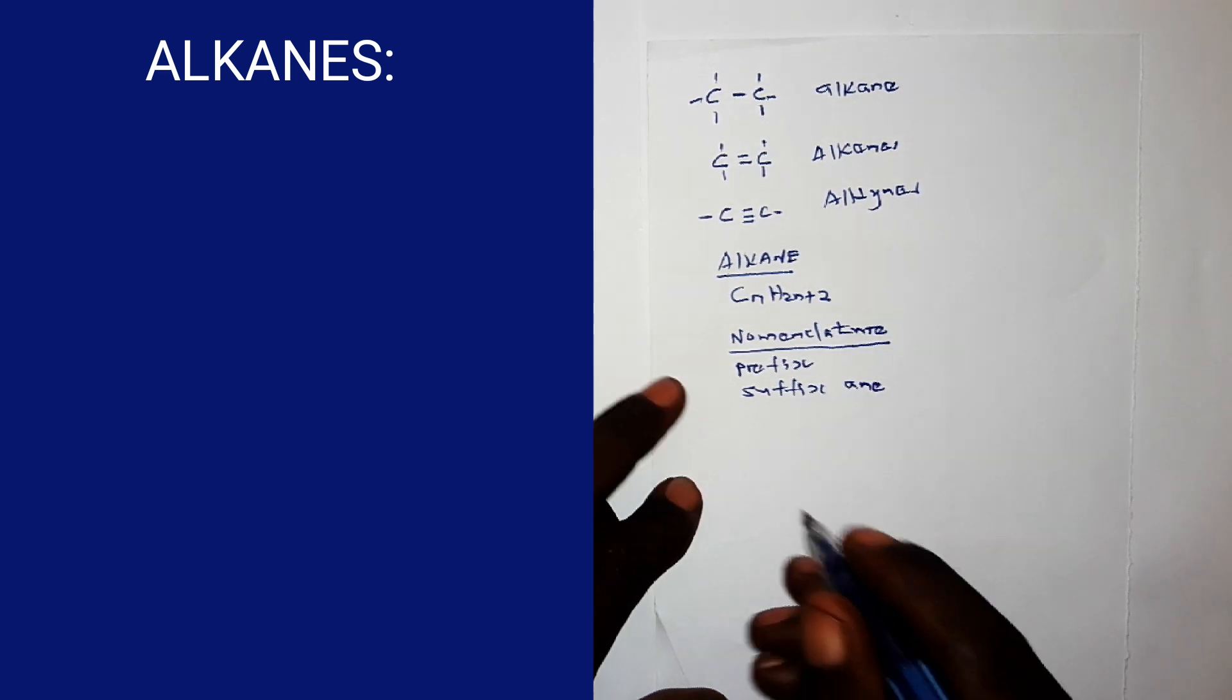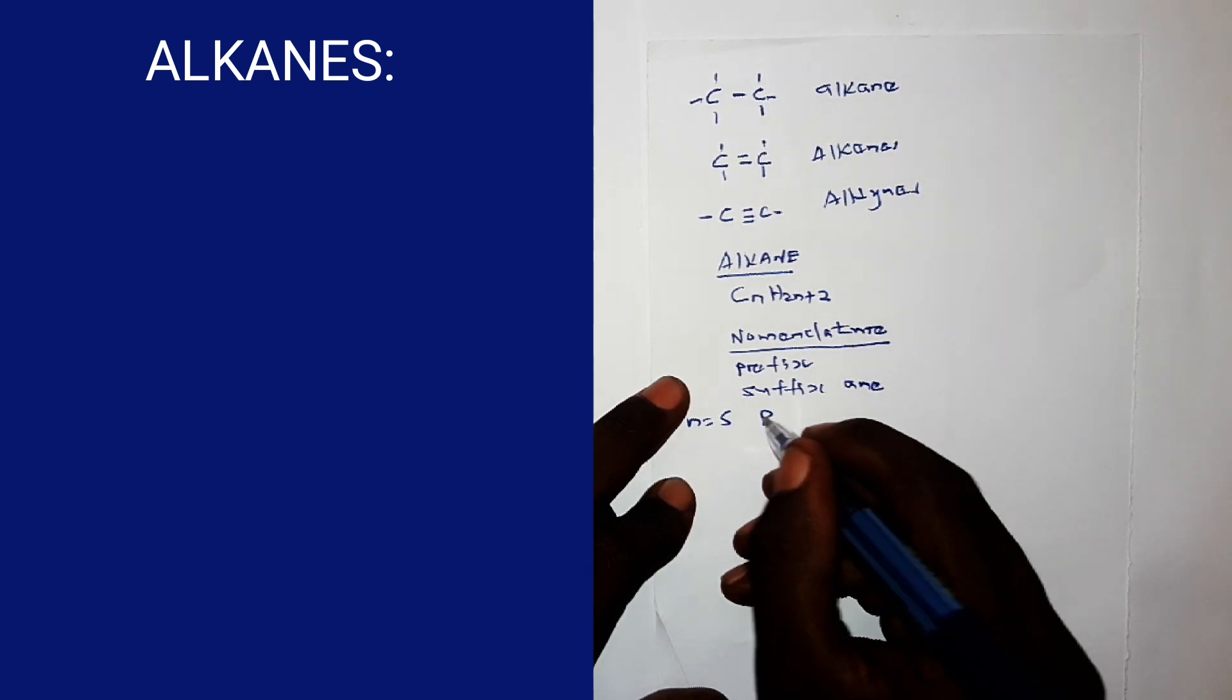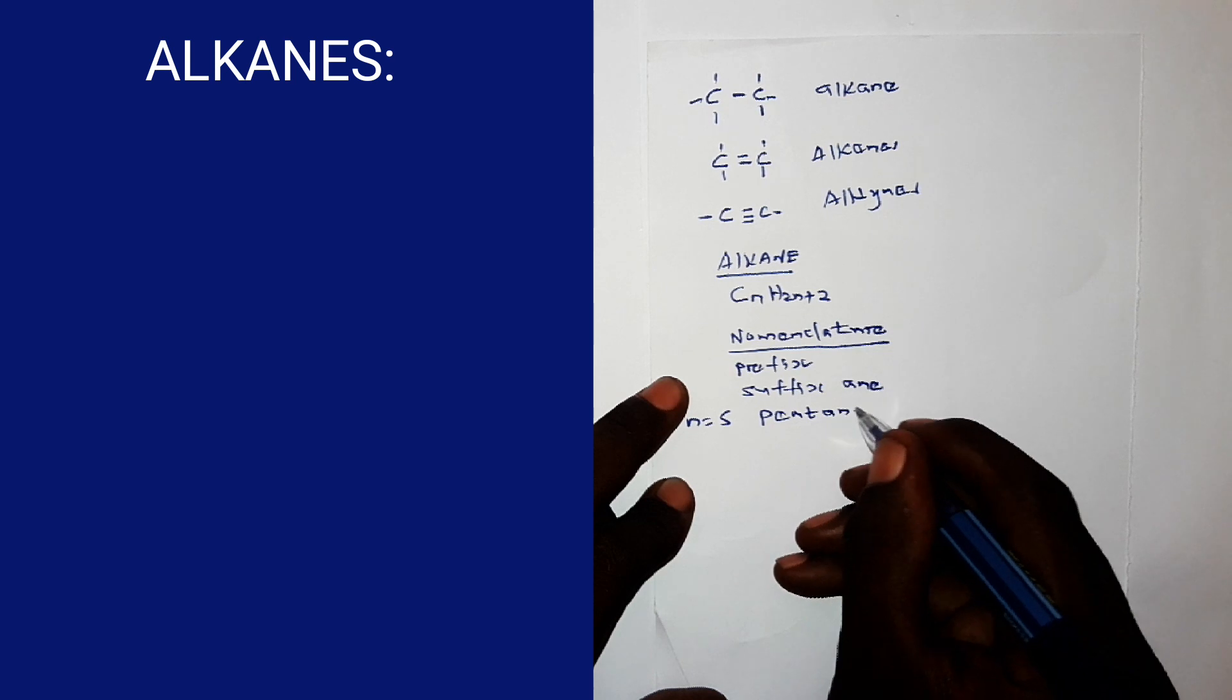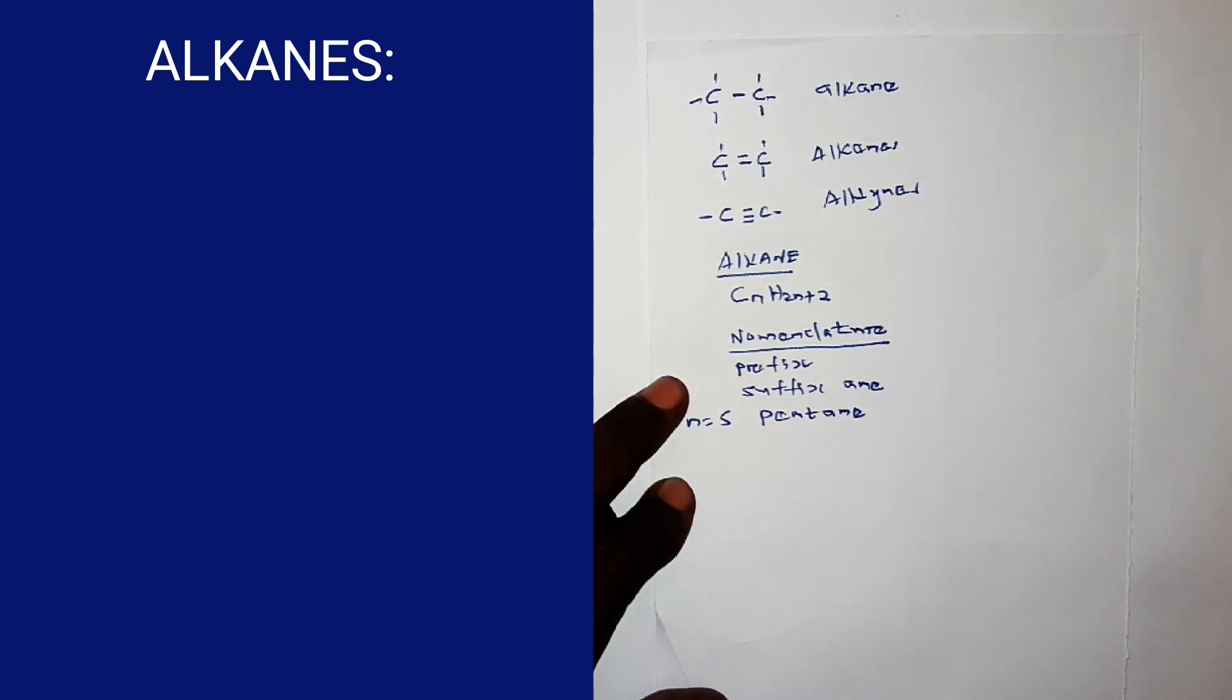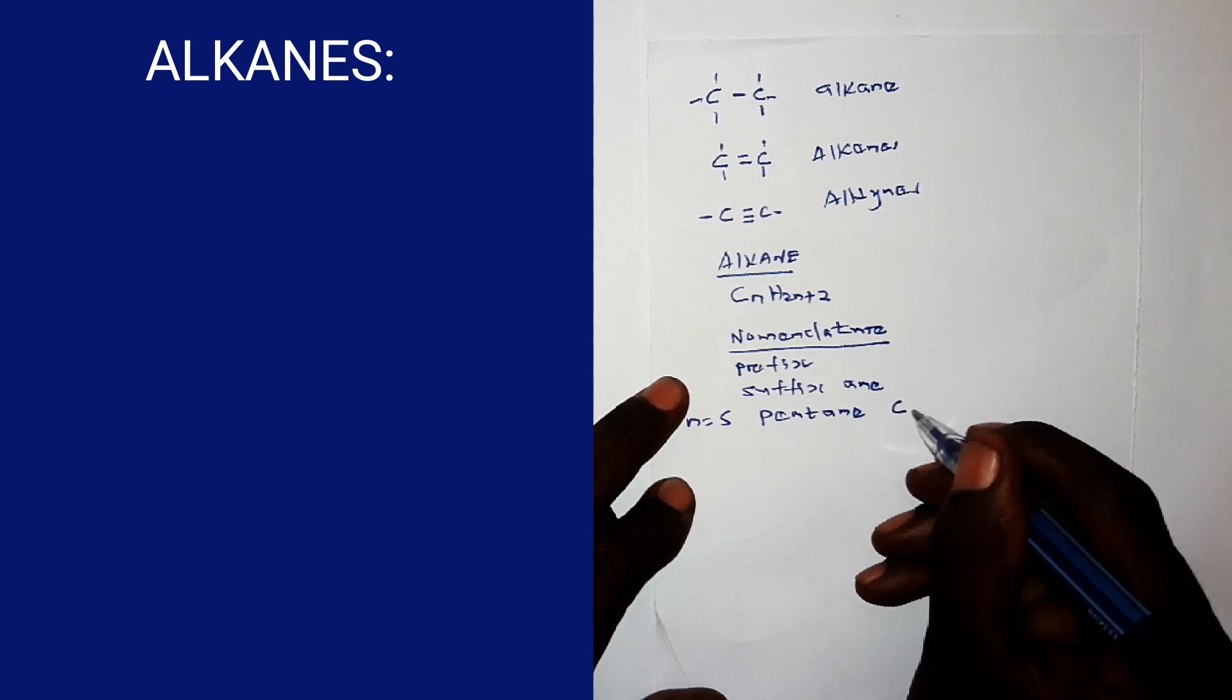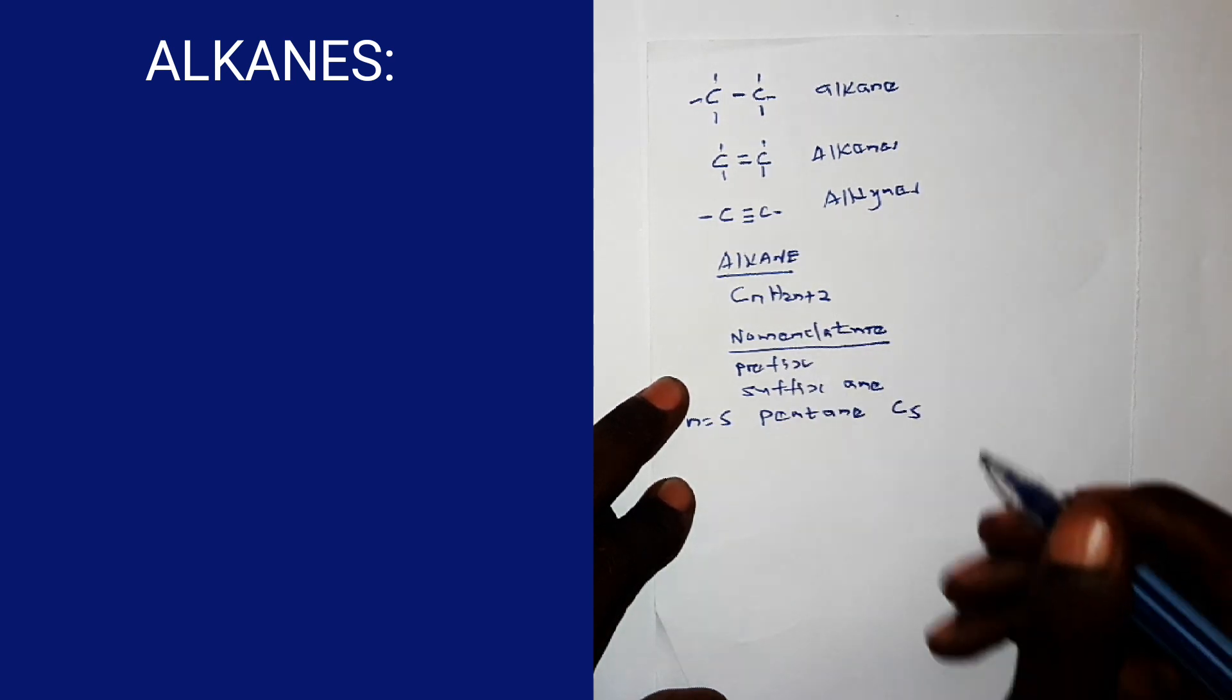Now, for example, I say, when n is five, the prefix is pent, then the suffix is -ane. So, we get what we call pentane. The molecular formula of this pentane, from the general formula up there, is C5. Then, two times five is ten, plus two is twelve.